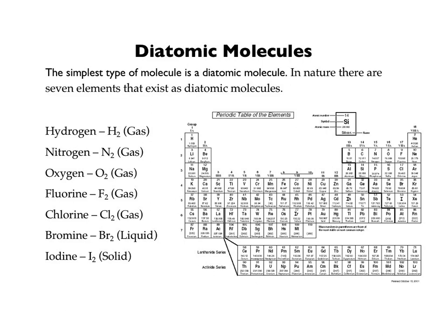There are actually seven elements which exist in nature as diatomic molecules. They are hydrogen, nitrogen, oxygen, fluorine, chlorine, bromine, and iodine. Of the 118 discovered elements, seven of them will always come as an element as a pair — as a diatomic molecule. So we don't have oxygen atoms floating around in the room right now; we have oxygen molecules, which is O₂. Nitrogen is N₂ as well — that's also in the air around us.